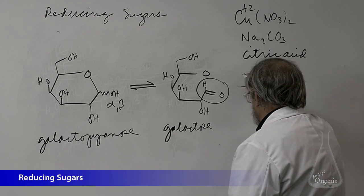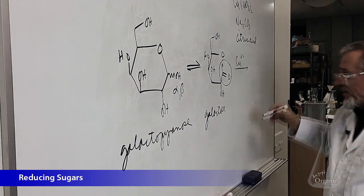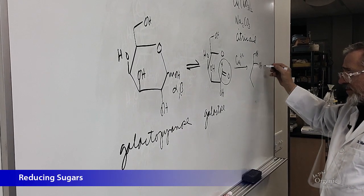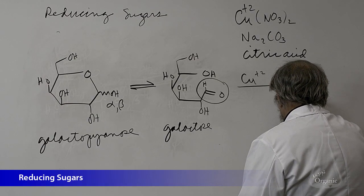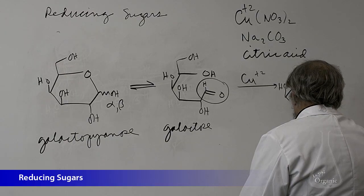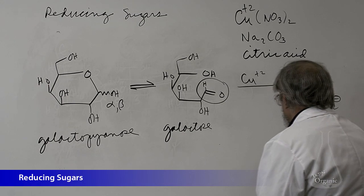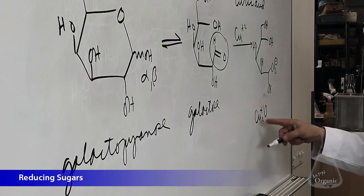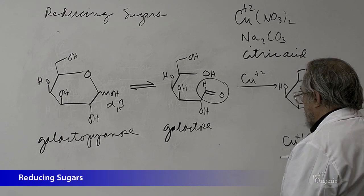It's going to give us the galactonic acid. And you're also going to get copper plus one oxide. This, again, is that reddish brown precipitate that forms concurrently with the oxidation product.